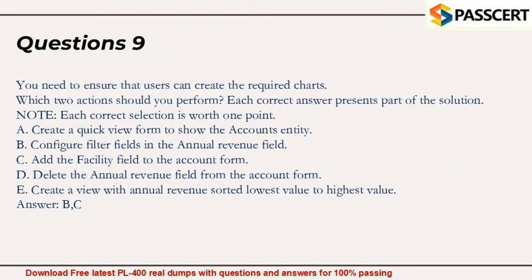Question 9: You need to ensure that users can create the required charts. Which two actions should you perform? Each correct answer presents part of the solution. Note: each correct selection is worth one point. A. Create a quick view form to show the account entity. B. Configure filter fields in the annual revenue field. C. Add the facility field to the account form. D. Delete the annual revenue field from the account form. E. Create a view with annual revenue sorted lowest value to highest value. Answer: B and C.